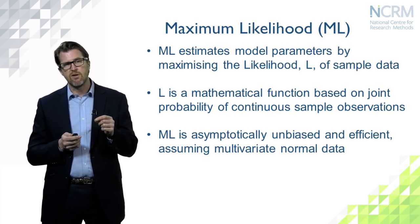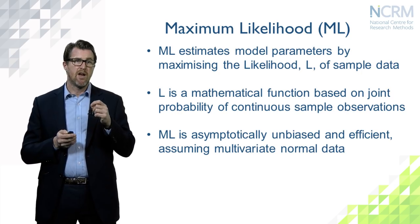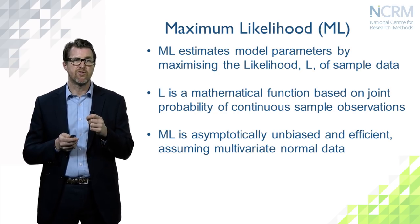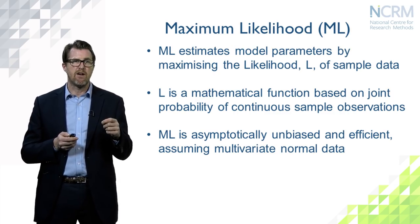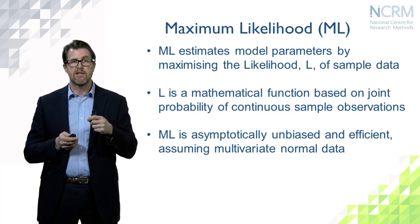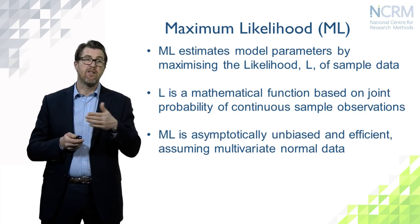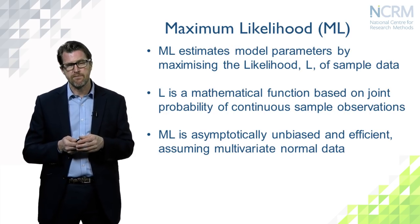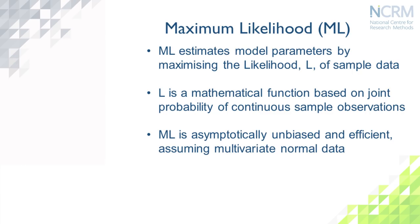The assumptions of being unbiased and efficient hinge on additional assumptions. One important one is that the data come from a multivariate normal distribution, which essentially requires continuous variables. Maximum likelihood is less appropriate when variables in the dataset are not continuous; in those situations different estimators are needed. For now the focus is on the simpler case of multivariate normal data and maximum likelihood.